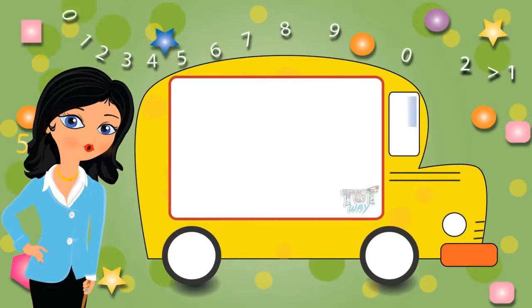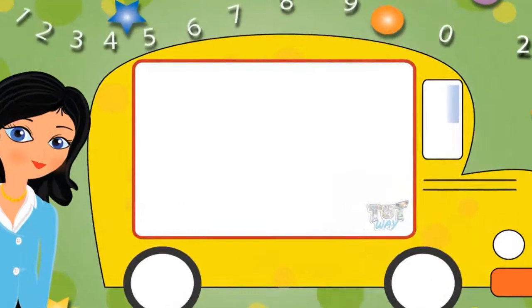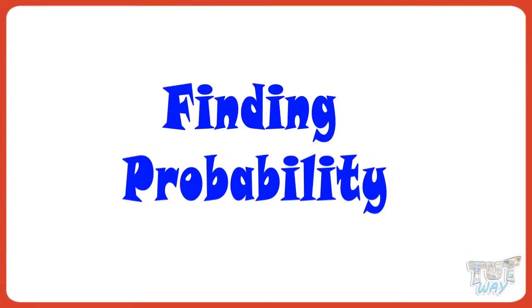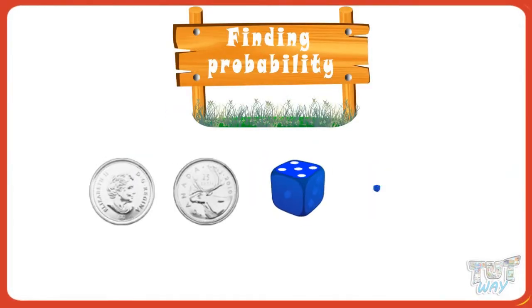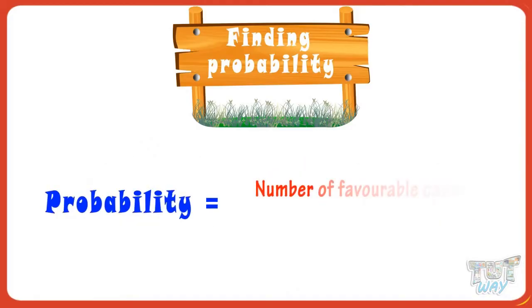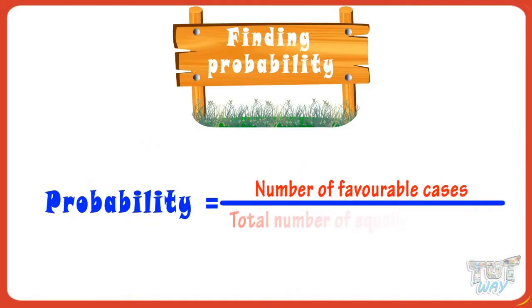Hi kids! As we learned a few basics about probability in previous lesson, now we are ready to learn how we can find the probability in numbers. So let's get started! We can find probability of an outcome or case in a probability experiment with the formula: number of favorable cases divided by total number of equally likely cases. Let's learn it more with help of a few easy examples.